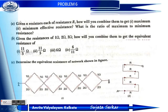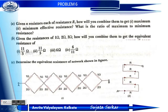Problem 6: Given N resistors each of resistance R, how will you combine them to get maximum and minimum effective resistance? What is the ratio of maximum to minimum resistance? Also given resistances of 1, 2, and 3 ohm — how will you combine them to get equivalent resistances of 11/3, 11/5, 6, and 6/11 ohm?